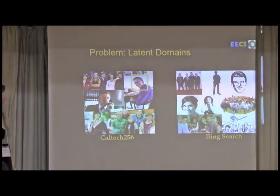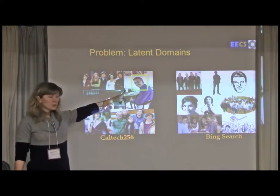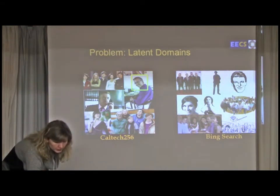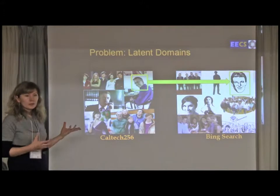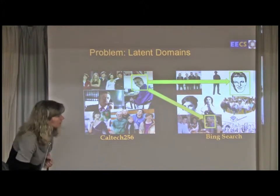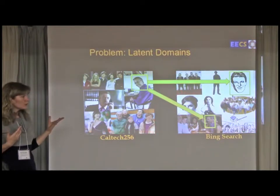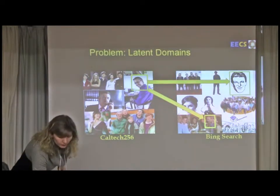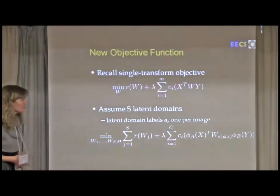Back to this problem of latent domains. Imagine that this is our target domain and we'd like to classify this image of the face. We're going to compare it to images in the source domain, for example, this particular image, using the learned transformation. But when we compare it to this particular image, notice that the images are actually quite different. One is a drawing and the other is a photograph. So the intuition is that we actually might want to use different transformations to compare target examples to different subdomains or latent domains in the training data. And the problem is that we really don't know what they are, so we'd like to learn them.